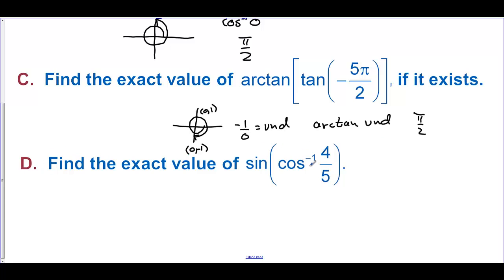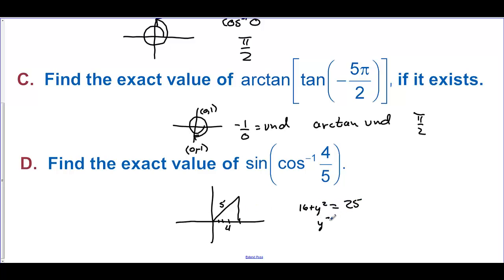Find the exact value of sine of inverse cosine of 4 fifths. We put this on a right triangle: cosine is adjacent over hypotenuse, so adjacent is 4 and hypotenuse is 5. Using the Pythagorean theorem, 16 plus y squared equals 25, so y squared equals 9 and y equals 3. This is a 3-4-5 right triangle. We found the angle. Now we find the sine of that angle, which is opposite over hypotenuse, equal to 3 fifths. So the answer is 3 fifths.